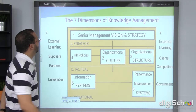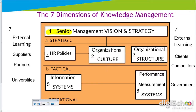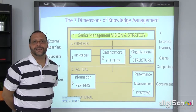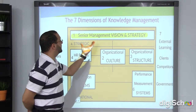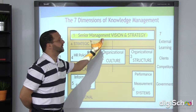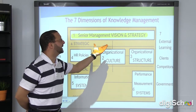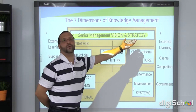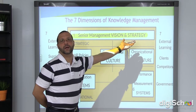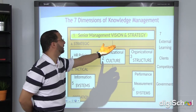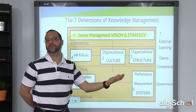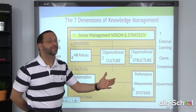First of all, we have the dimension of senior management vision and strategy. It is considered the most important dimension because the way senior management sees the perspectives for a company will determine the way they will strategize and make choices for that company, which will ultimately determine whether the company succeeds or fails.